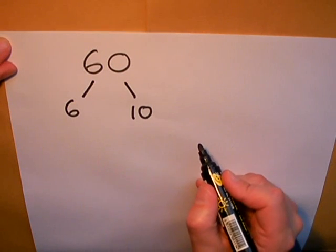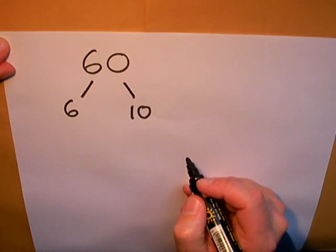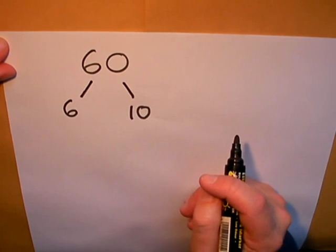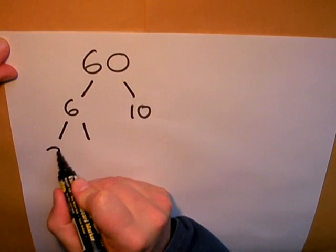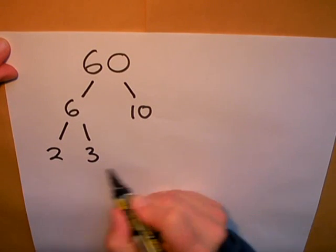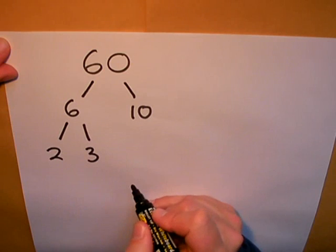So can I divide 6 or 10 up into further numbers that multiply together? Let's have a look. 6 can be made up of 2 multiplied by 3. These are prime numbers, so I can stop there.